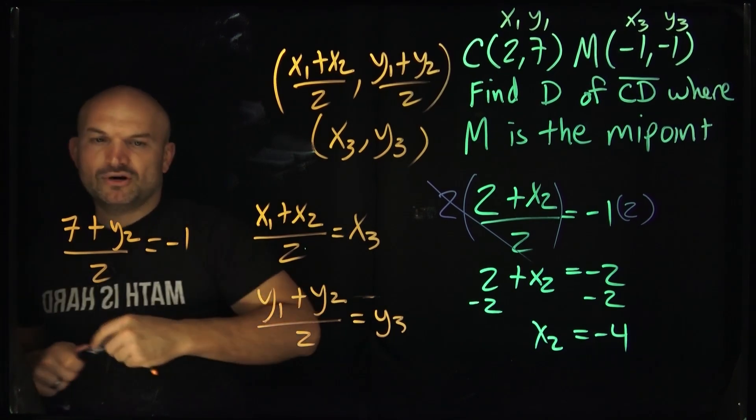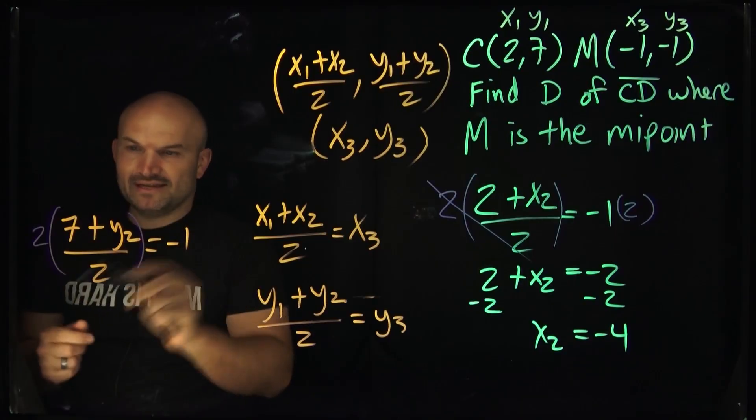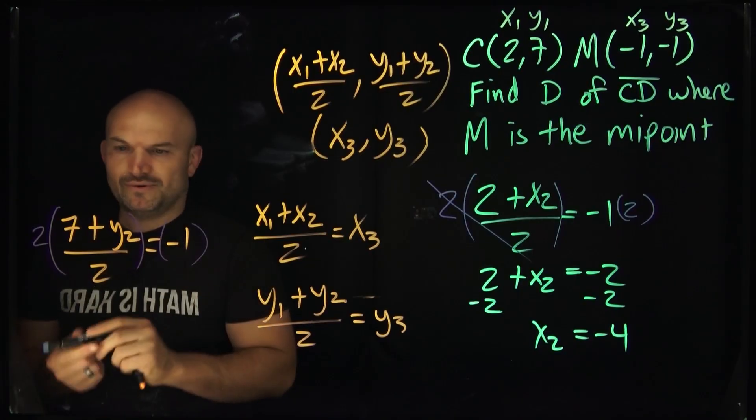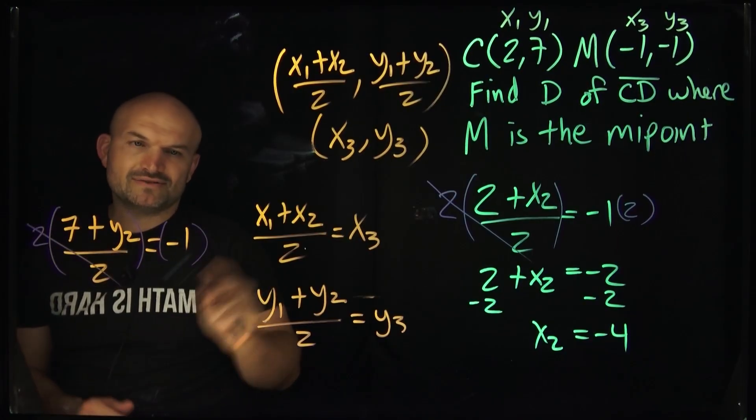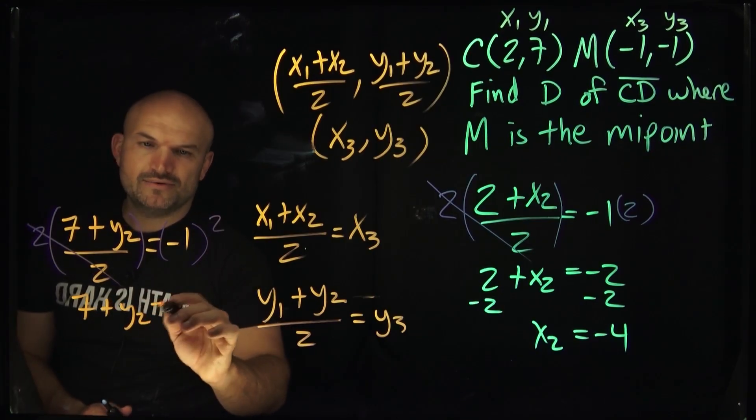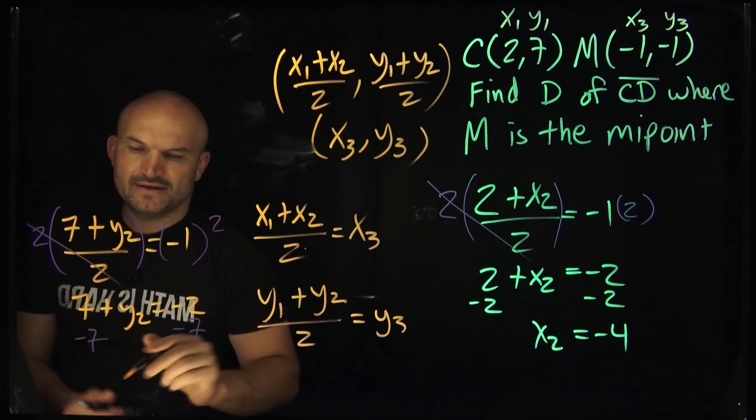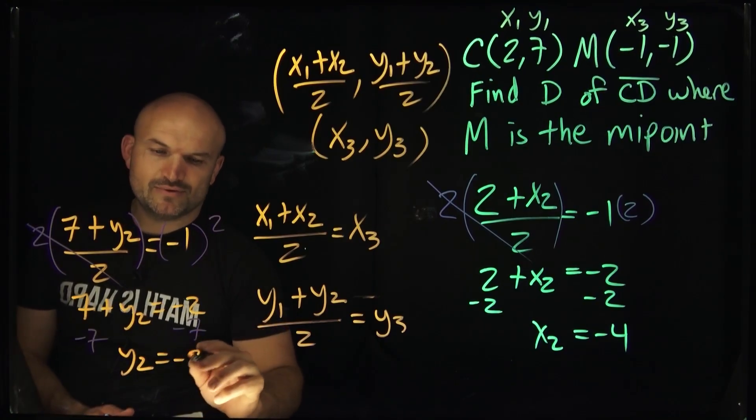So again, I'm going to go ahead and multiply by 2 on both sides. Use parentheses because you're multiplying everything by 2. But these now are going to divide out, multiply by 2 over here. So therefore, you get a 7 plus a Y2 is equal to a negative 2. And then subtract the 7, subtract the 7. Y2 is equal to a negative 9.